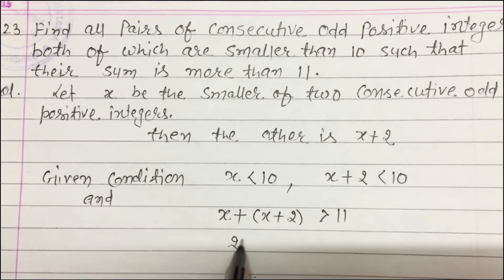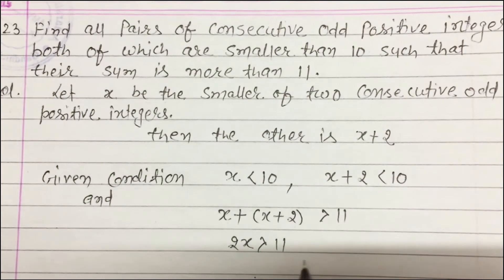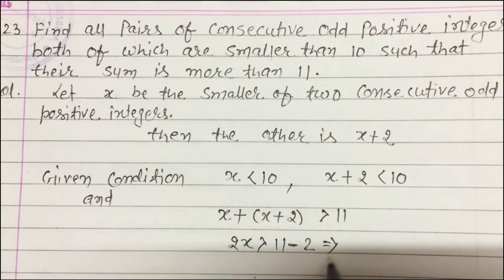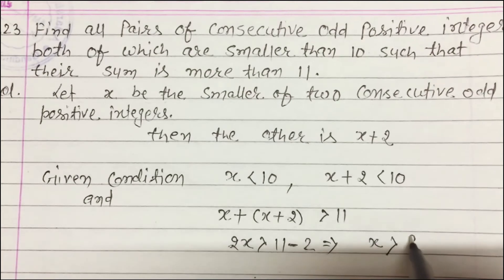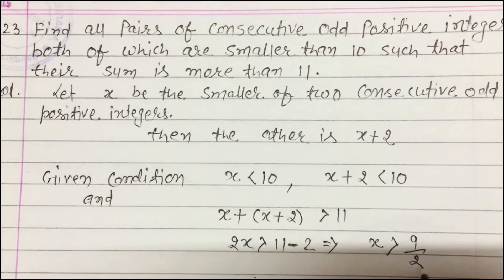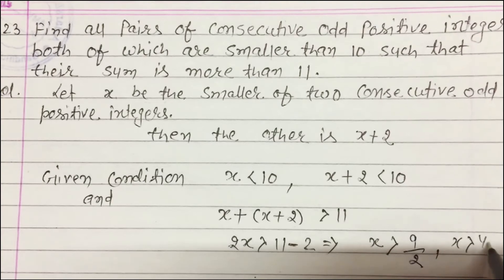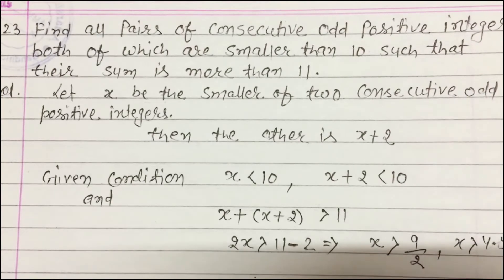From the sum condition: 2x > 11 − 2, therefore x > 9/2, which means x > 4.5.